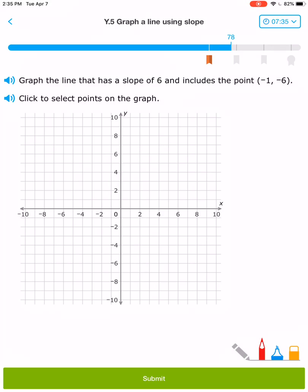(-1, -6). And then a slope of 6. 1, 2, 3, 4, 5, 6, over 1. Those are my two points.